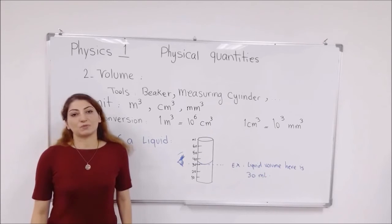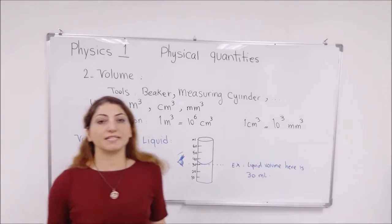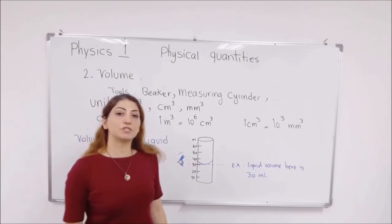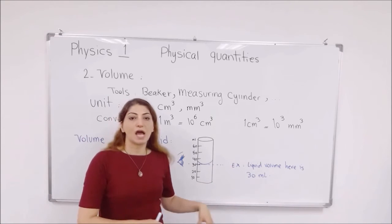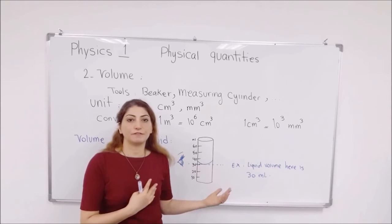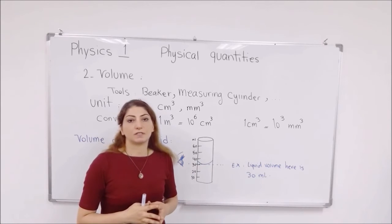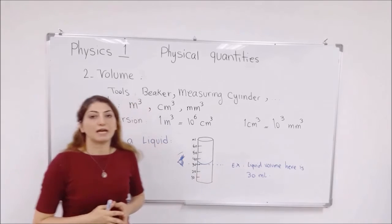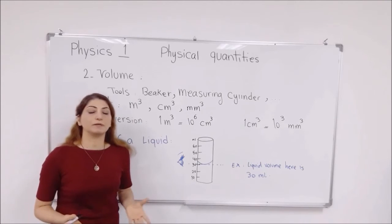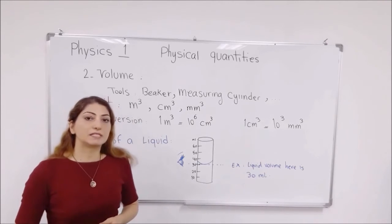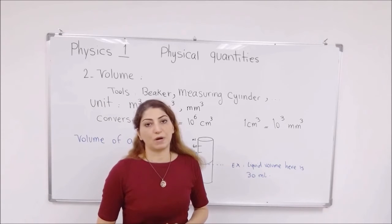Now, the next quantity that we want to talk about is volume. We learned about mass, how to measure the mass of different states of matter, and now here we have volume. What is volume? Volume is the amount of space that the objects occupy.